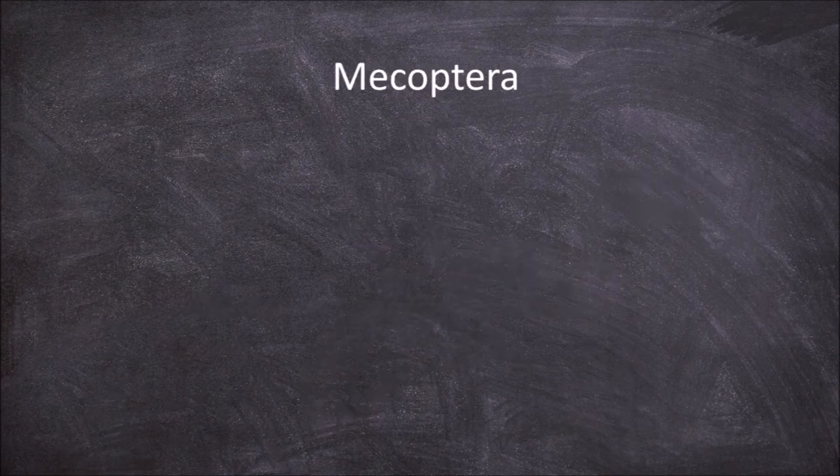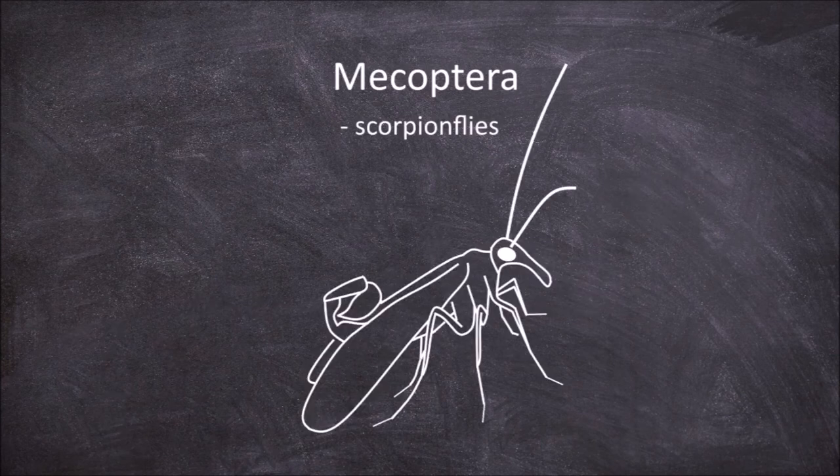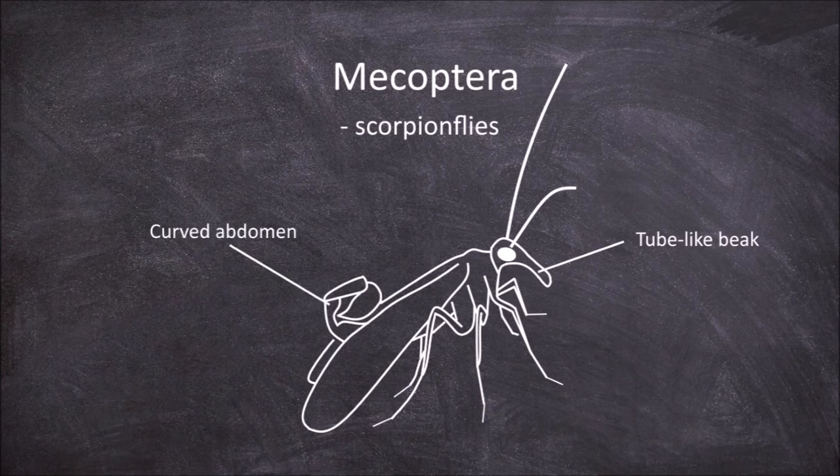The next order is the Mecoptera, which are the scorpion flies. The characteristic feature of this order is the presence of a long tube-like beak with the mouthparts on the tip. In some species the males have a distinctive curvature of the abdomen over the back, giving the appearance of a scorpion tail.